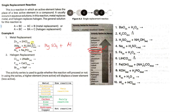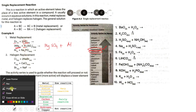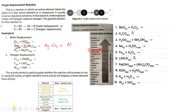Next, we have Zn plus HCl. Zinc is a metal, and in HCl both elements are non-metals. But a metal may replace a non-metal when that non-metal is either carbon or hydrogen — and here we have hydrogen. Looking at the activity series, zinc is over here and hydrogen is over here, so zinc is much more active compared to hydrogen. Zinc will replace hydrogen in this compound.